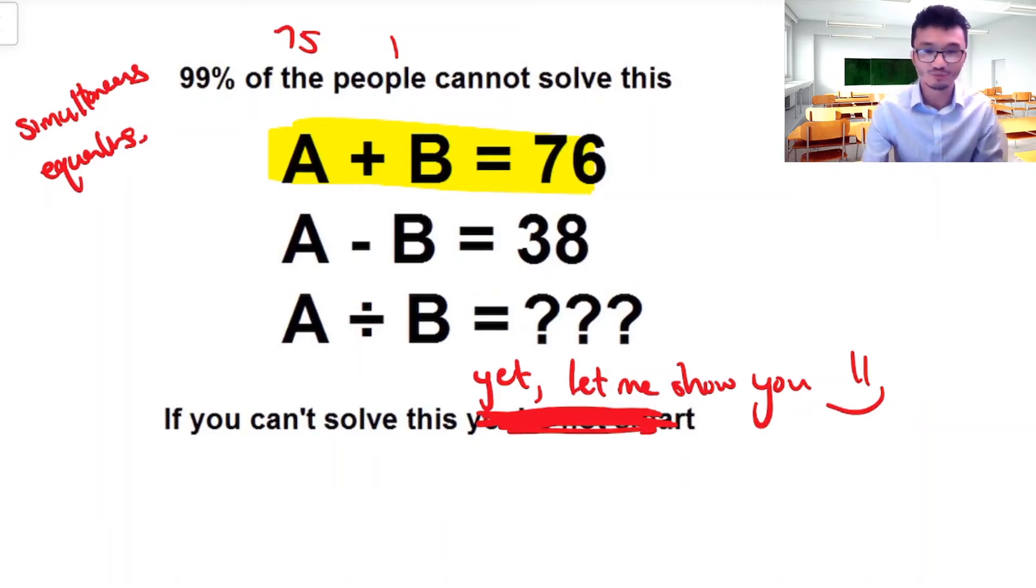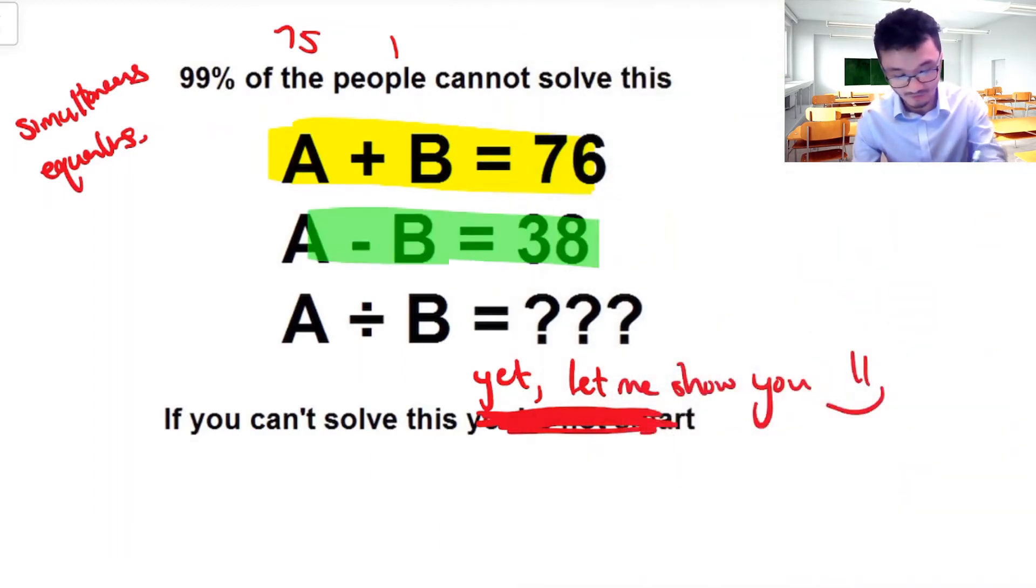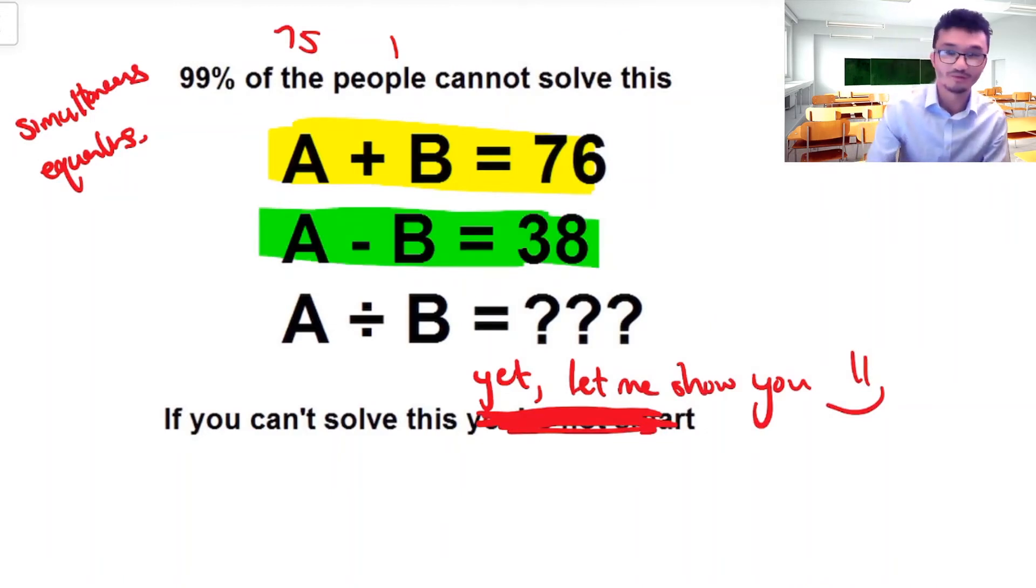But the issue is when we start introducing the second condition over here, that needs to also be fulfilled. That requirement needs to be satisfied as well. And obviously 75 minus 1 is not going to be 38. So the idea is I need to find some combination of numbers that not only add to 76, but also when they are subtracted by each other, they give me 38.